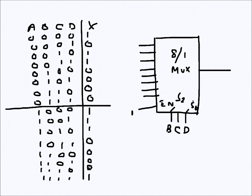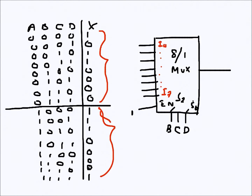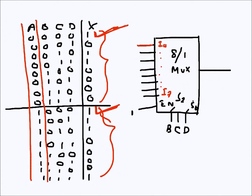Looking at the truth table, I can divide the whole table into two parts using B, C, D going from 0 to 7, and then again 0 to 7. So essentially I0 through I7 correspond to those groupings. When I look at I0, I need to examine the output in both rows where the select is choosing I0 and see how the output relates to A, the most significant bit. The output is always one here, so I can safely apply one to I0.